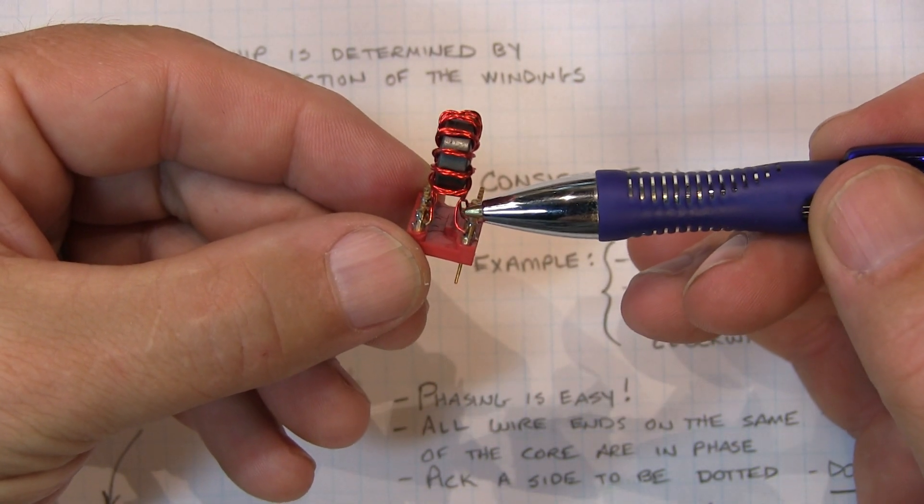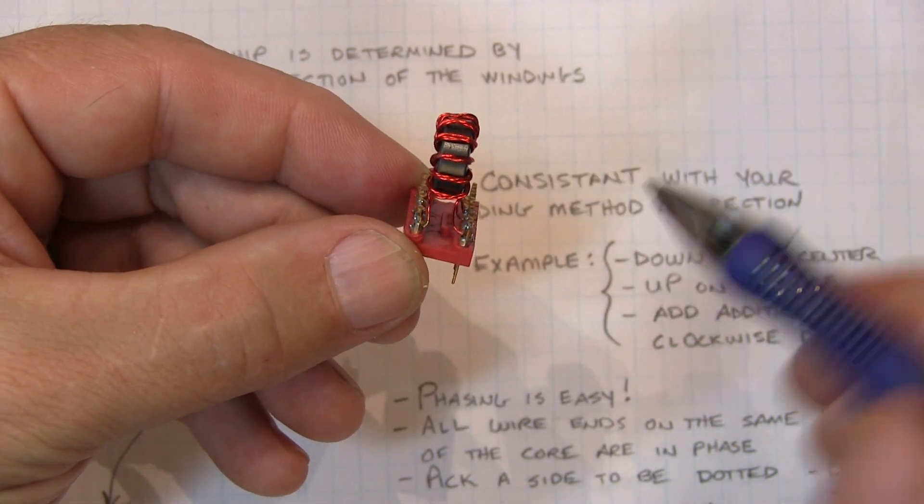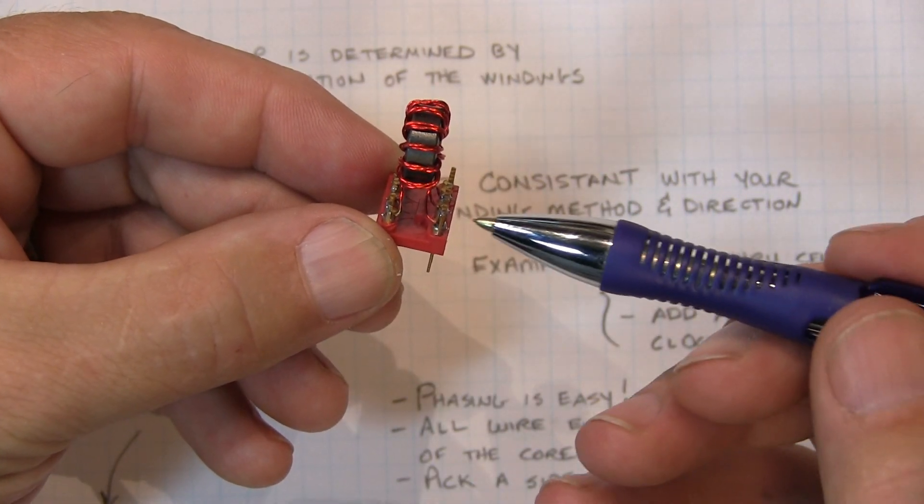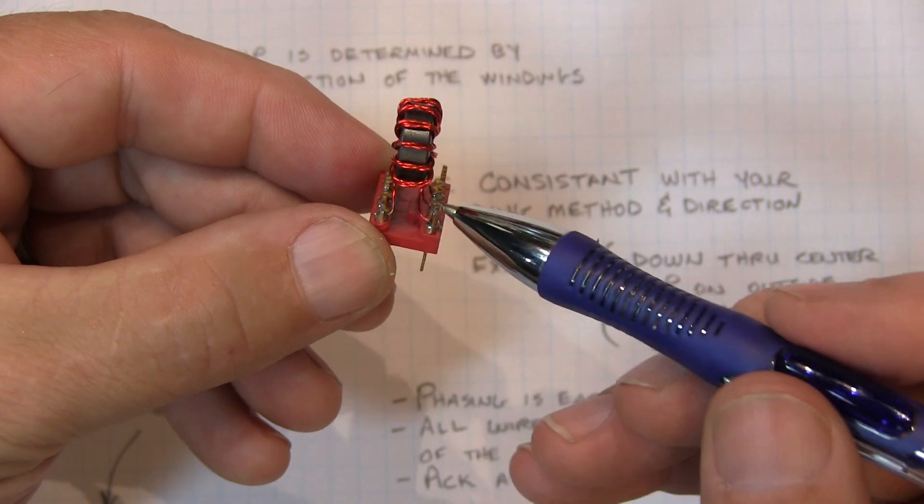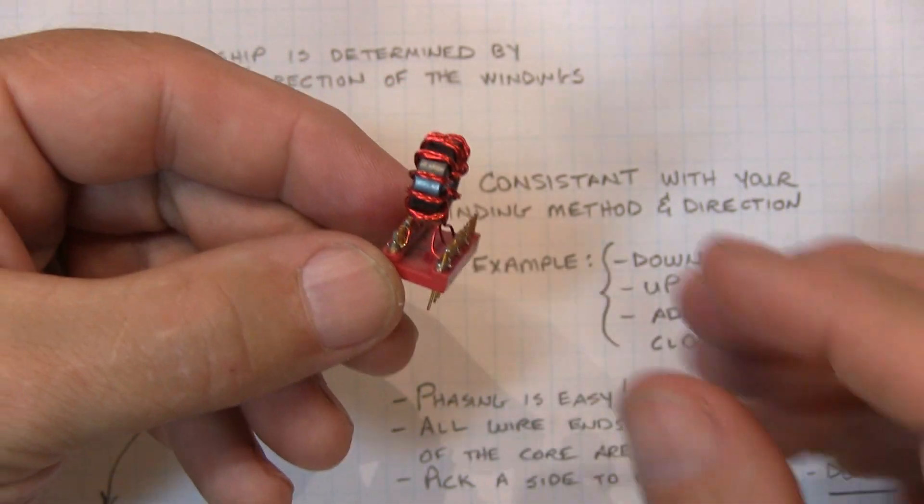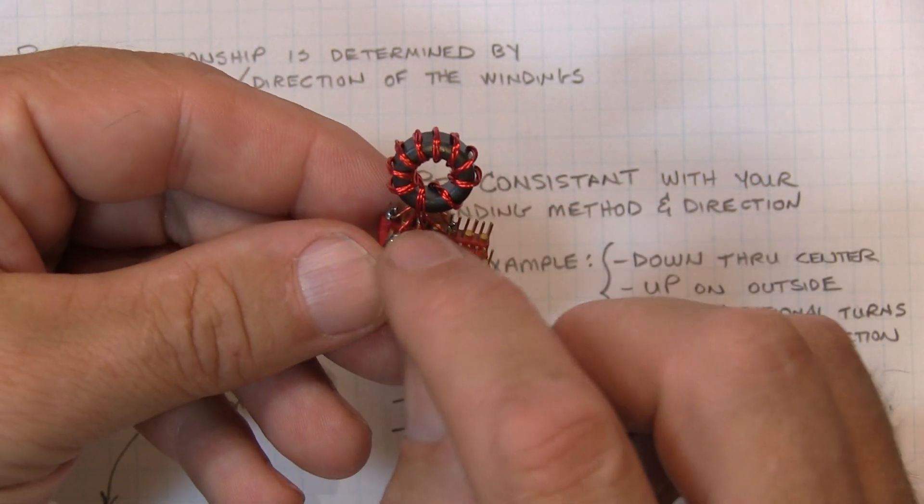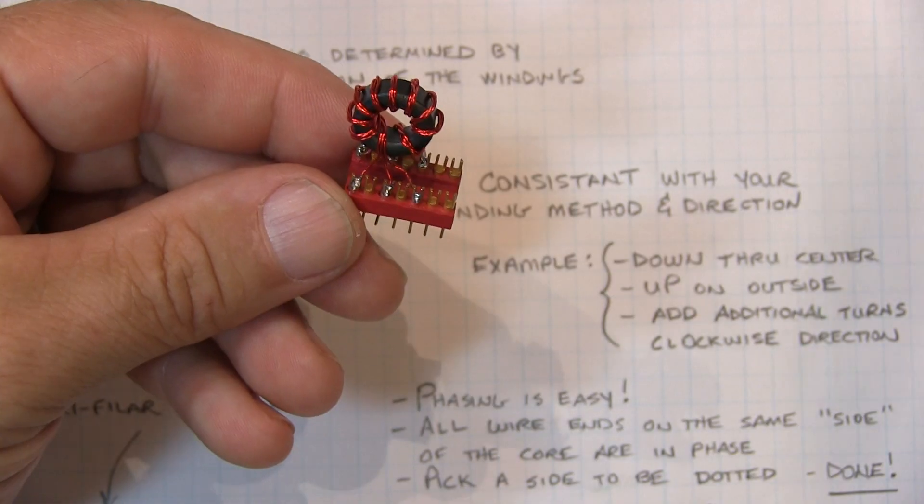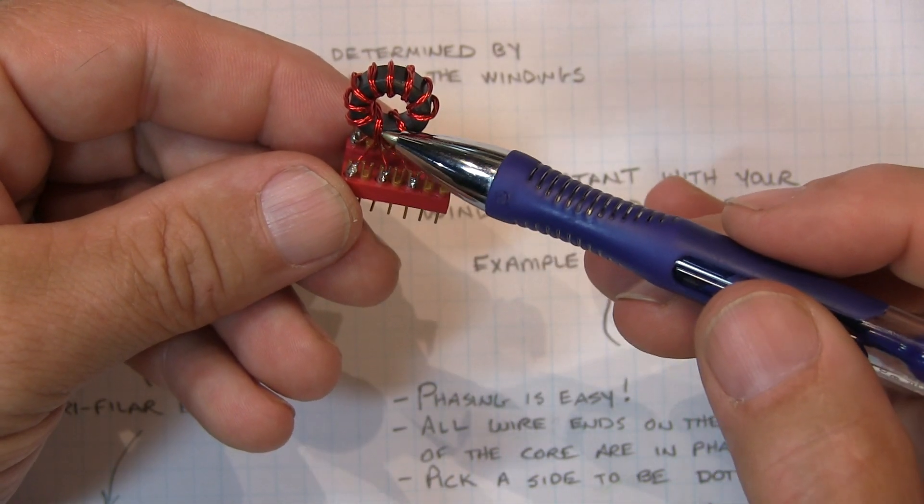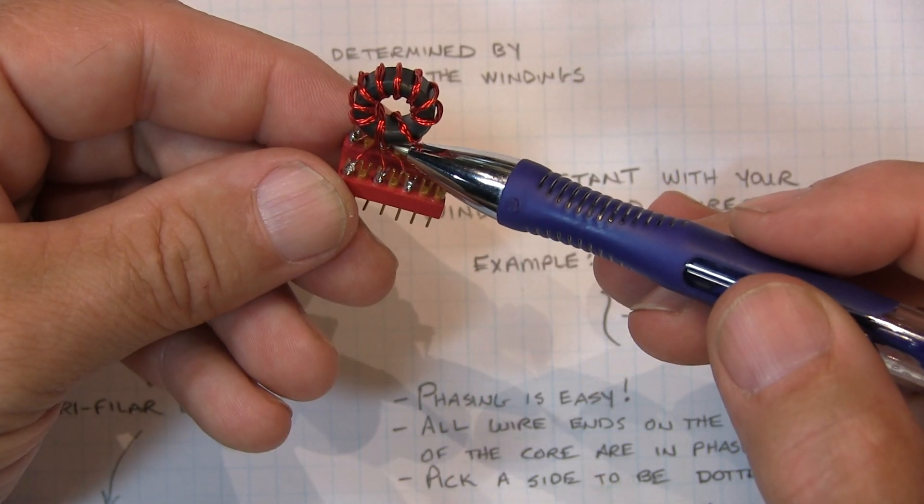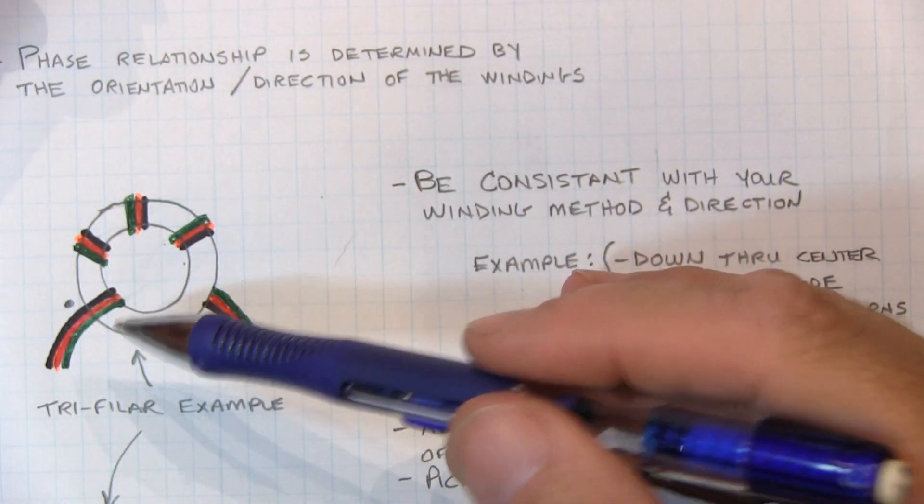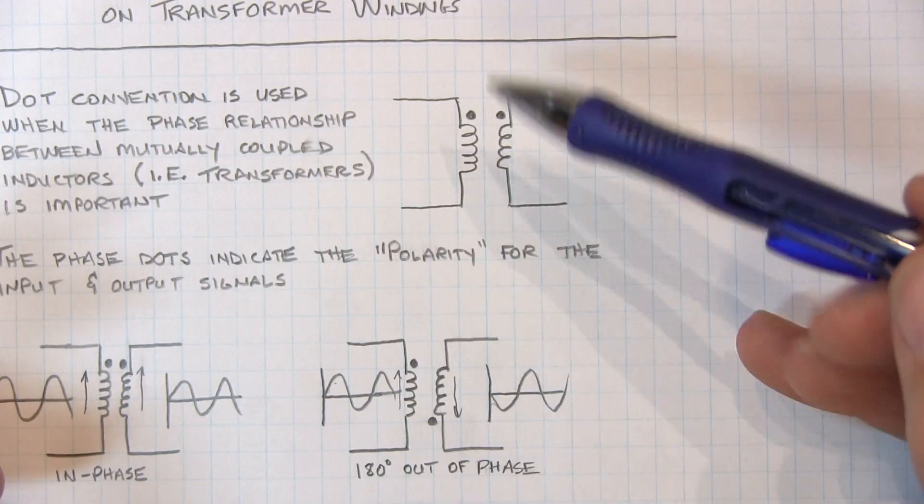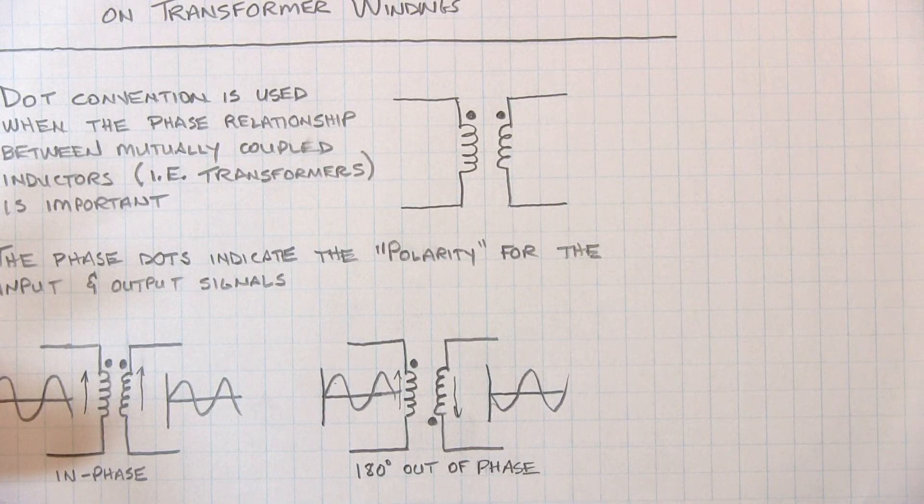Three of the windings, or three of the wires, are going off of this side. They're all coming out on this side. So we can simply pick one side of this, one side or the other, and call that essentially our dotted end of the wires. So when we go to hook this up into the schematic, any of the wires that are essentially on one side are the ones that essentially have the dots on them, and would be hooked up in the schematic where the dots are.